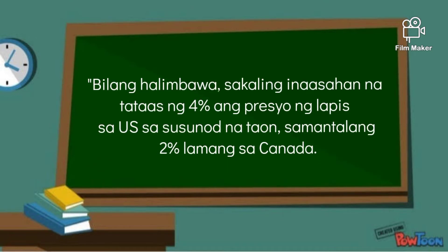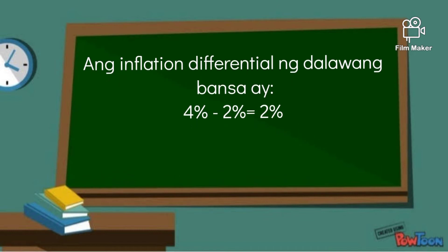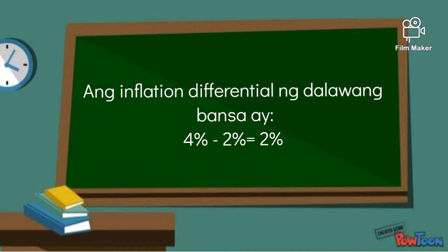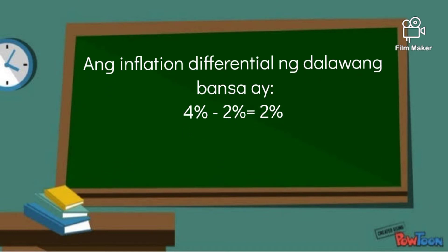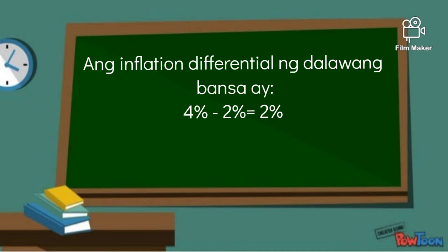Bilang halimbawa, sakaling inaasahan na tataas ng 4% ang presyo ng lapis sa UF sa susunod na taon, samantalang 2% lamang sa Canada, ang inflation differential ng dalawang bansa ay 4% minus 2% is equal to 2%.